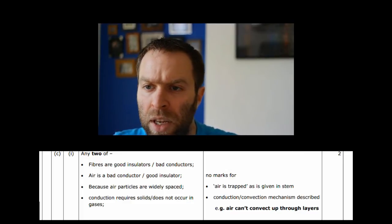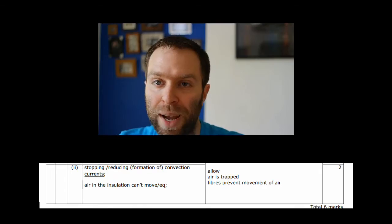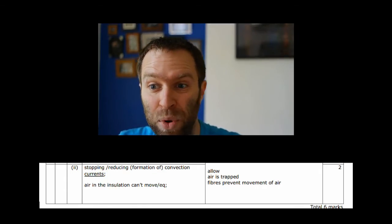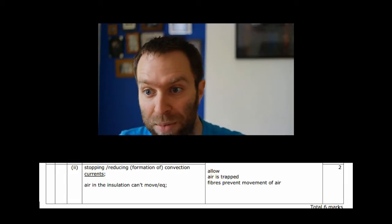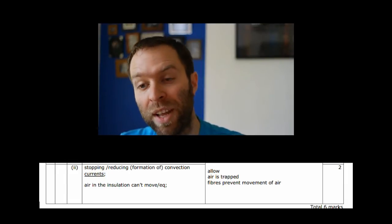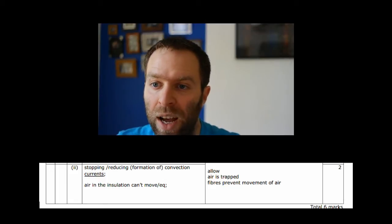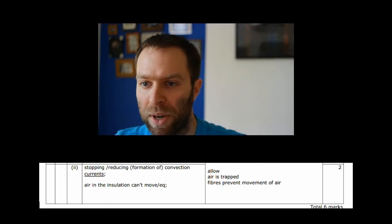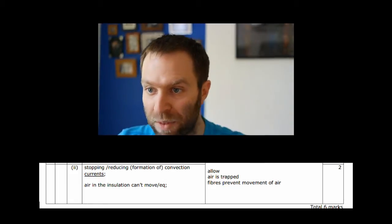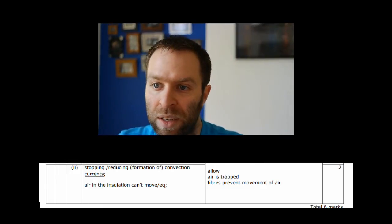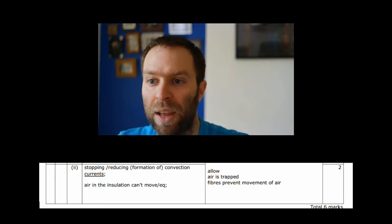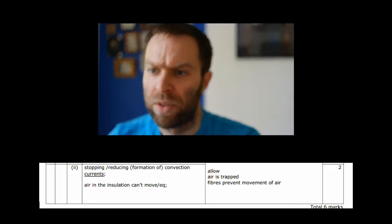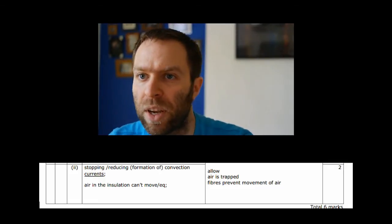The second part says explain how this type of insulation reduces heat loss by convection. Again, it's good to talk about how convection works - talking about hot air expanding, becoming less dense, and moving. The key thing is this movement. If the air is trapped, the air can't move. So stopping the movement of air stops convection. If we look in the mark scheme, it says preventing convection currents, stopping air from moving, no air moving means no convection, air is trapped, fibers prevent movement - that sort of thing.